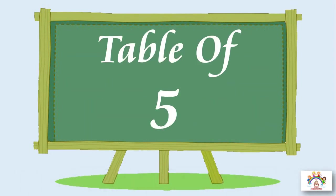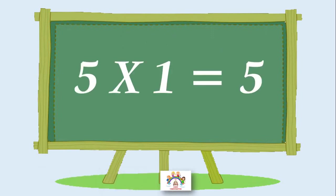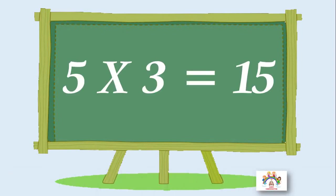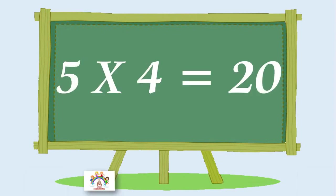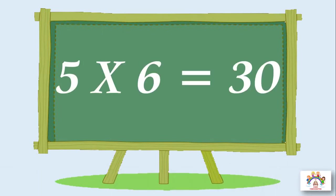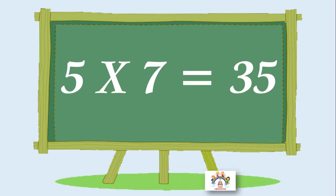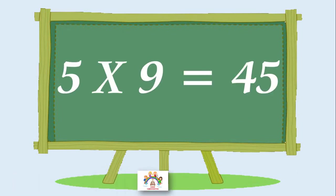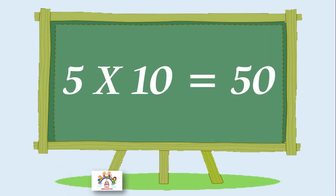Table of Five. Five sevens are thirty-five. Five eights are forty. Five nines are forty-five. Five tens are fifty.